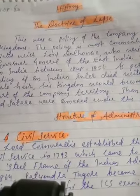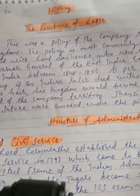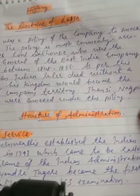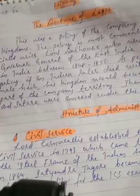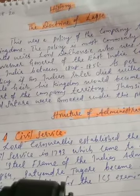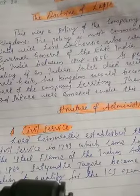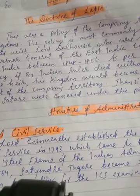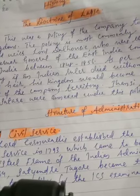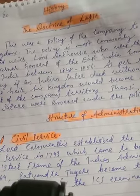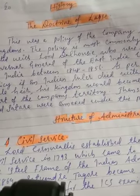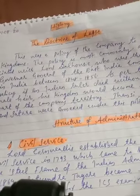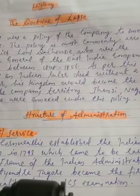This was a policy of the company to annex kingdoms. The policy is most commonly associated with Lord Dalhousie, who was the Governor General of the East India Company in India between 1848 to 1856. Under Governor General Lord Dalhousie, annexations were at the peak level.